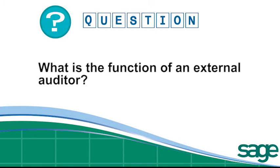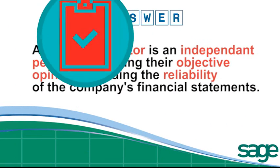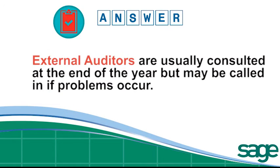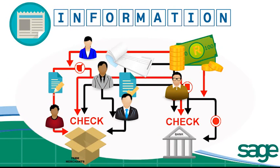What then is the function of an external auditor? An external auditor is an independent person expressing their objective opinion regarding the reliability of the company's financial statements. They usually only come in at the end of the year to audit the company's financial statements, but may be called in if problems occur. The external auditor should also be concerned with the quality of the internal control of a business.